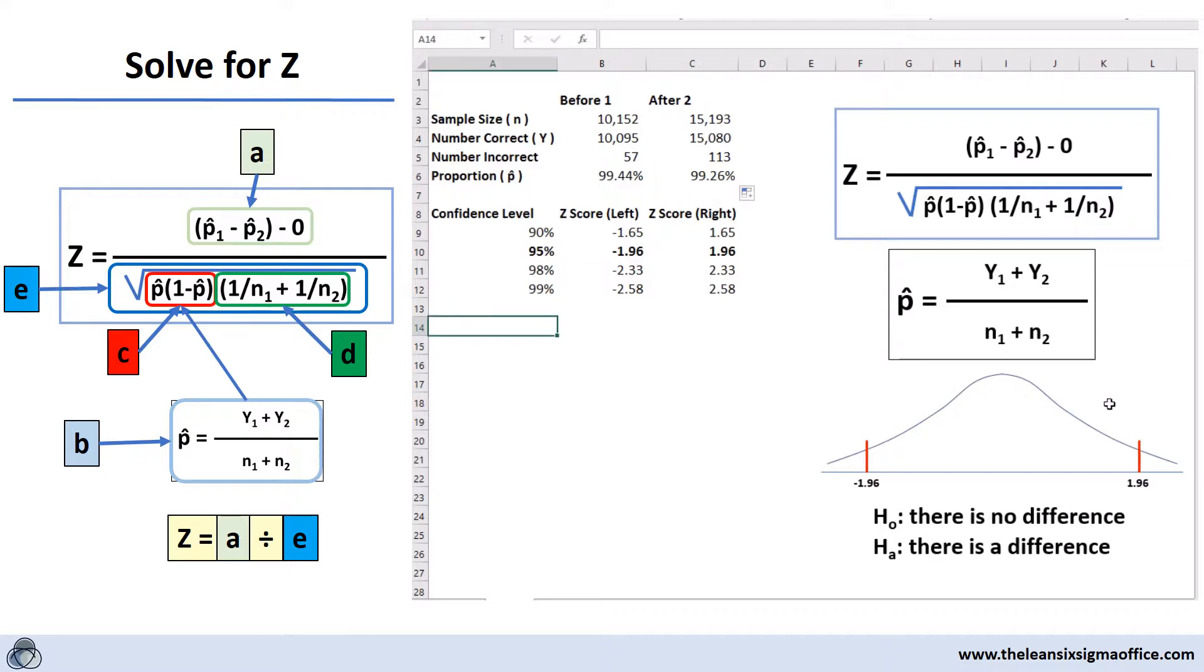We're going to break this down into its elements and we're going to go with about five steps here, seven if you count the final step. The first step here is we're going to calculate the numerator. That's going to be p1 minus p2 minus zero. That's step one.